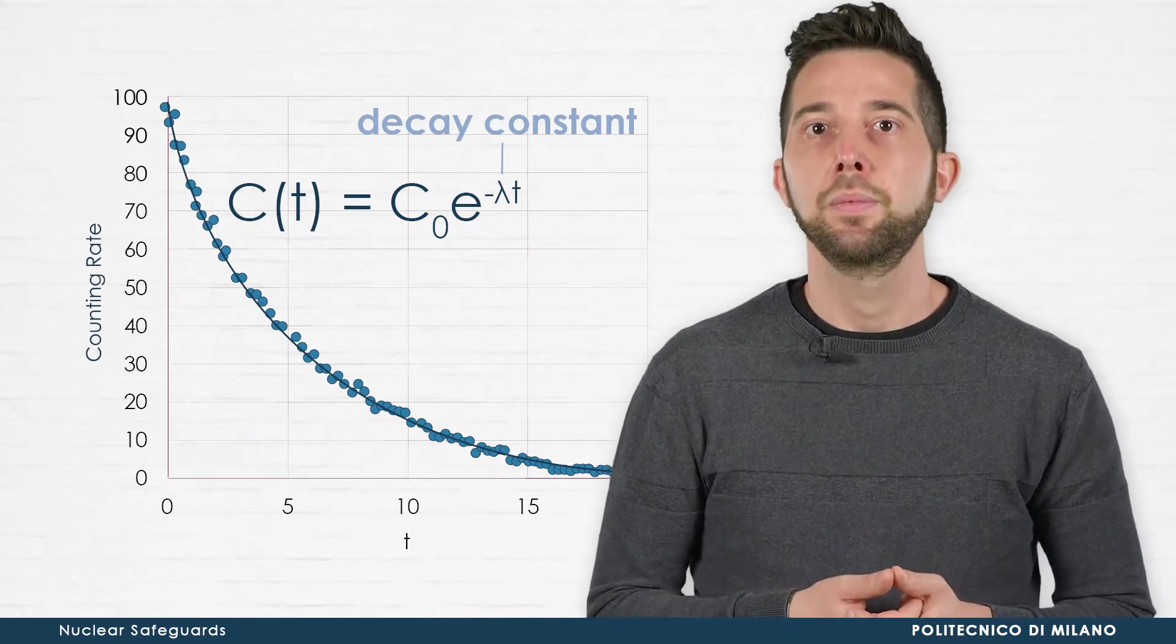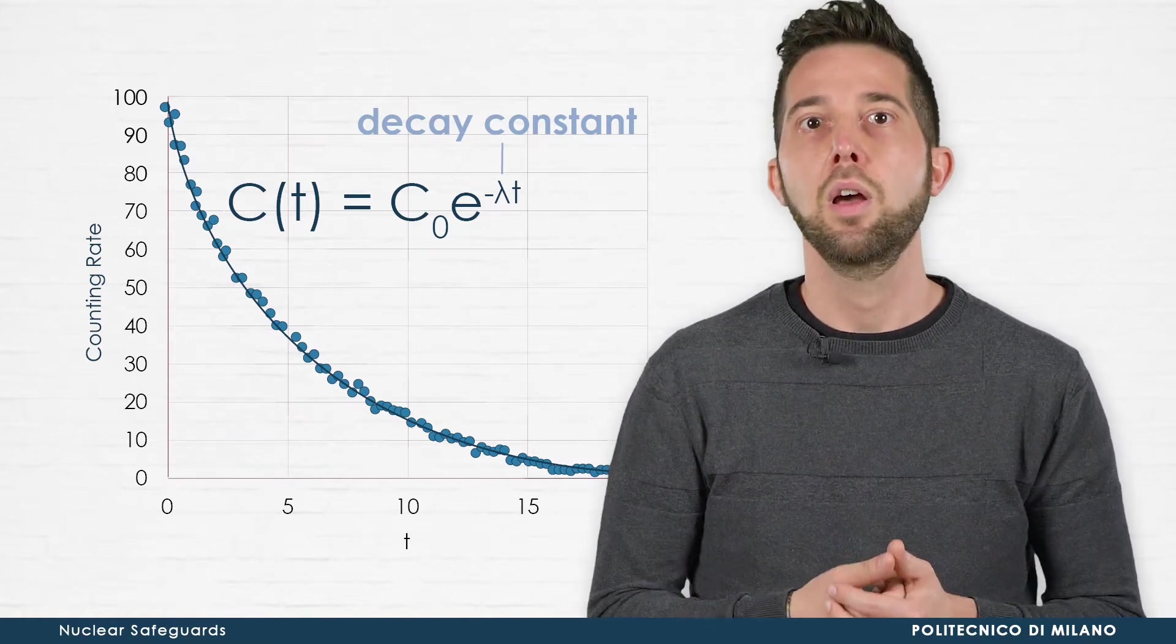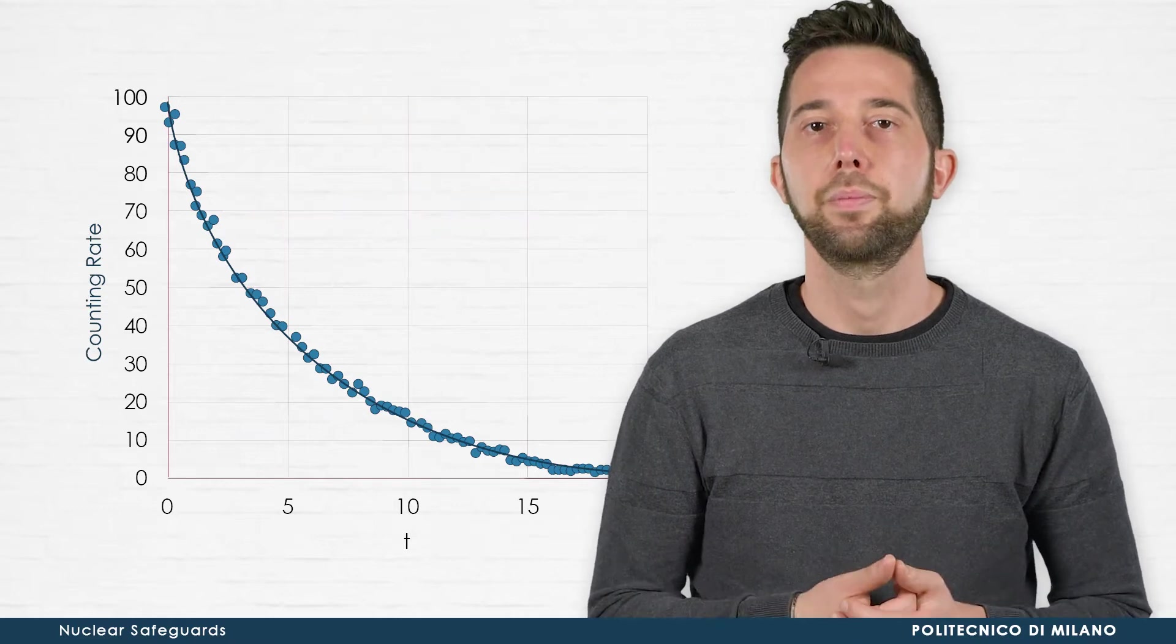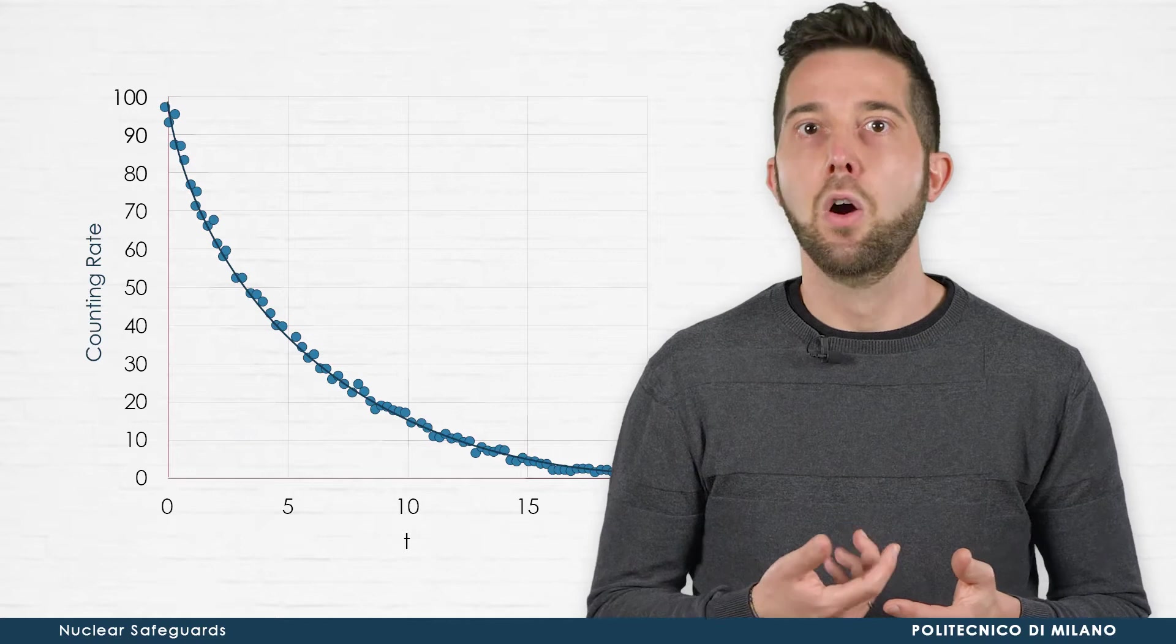the decay always maintains the same speed as a process that does not age. More mathematically, there is evidence each nucleus within the sample has a constant probability, lambda, of decaying over time. The value of lambda is characteristic of each nucleus.